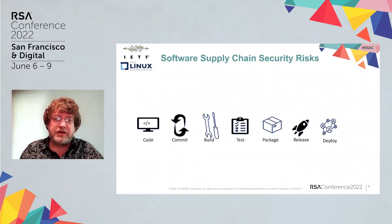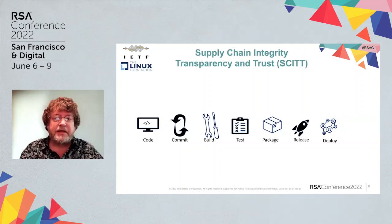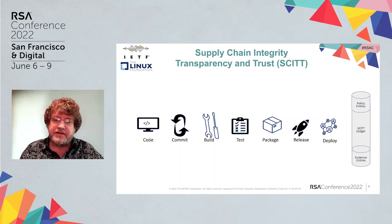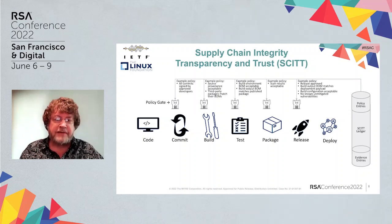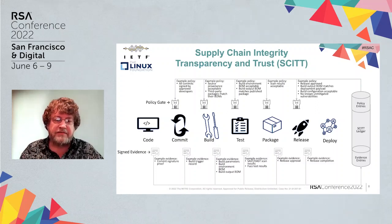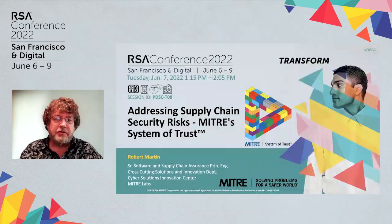I'm also going to talk about software supply chain risks specifically, and the idea is about integrity, transparency, and trust. The idea here is a distributed confidential ledger which can capture policies, and then can also grab evidence against those policies to then enable you to go through your process.